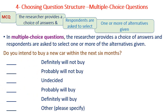Number one: MCQ. The researcher provides a choice of answers and the respondents are asked to select one or more of the alternatives given. Example: 'Do you intend to buy a new car within the next six months?' The choices are: definitely will not buy, probably will not buy, undecided, probably will buy, definitely will buy, or others — please specify.